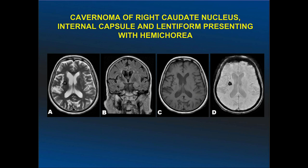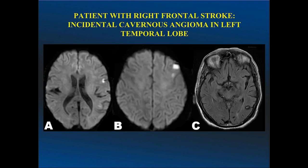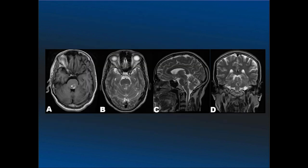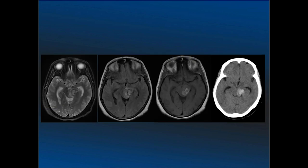Based on location, cavernomas can have different types of clinical presentations. This was an incidental cavernoma of the temporal lobe. This was a pontine cavernoma. You can see repeated stages of bleeding in cavernomas. This is a left midbrain cavernoma, also demonstrating repeated hemorrhages.